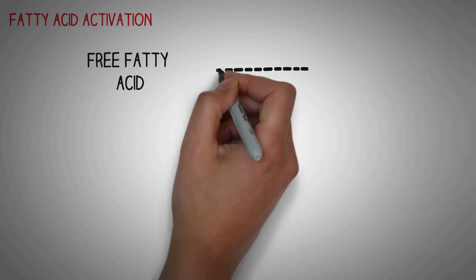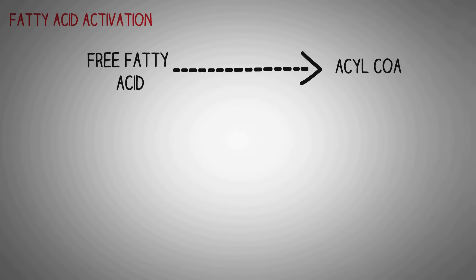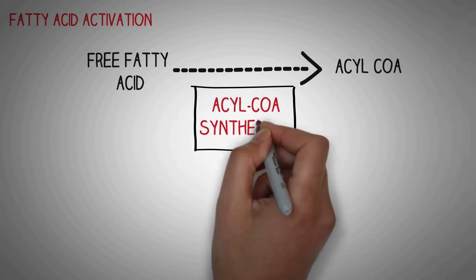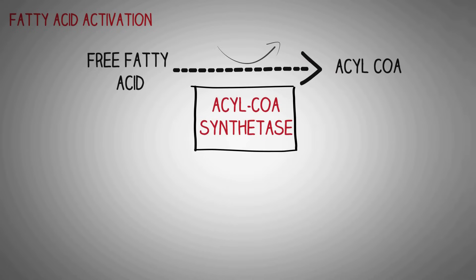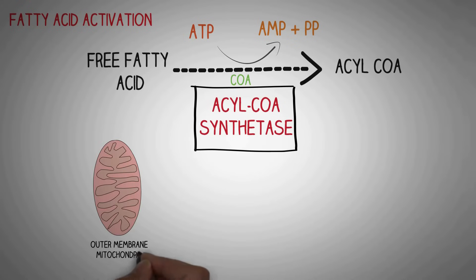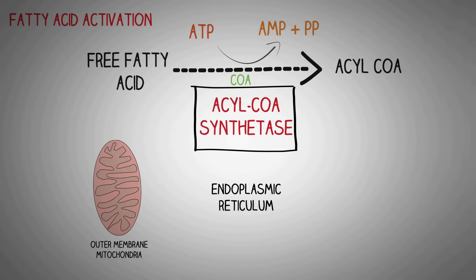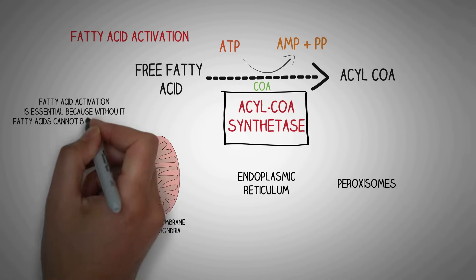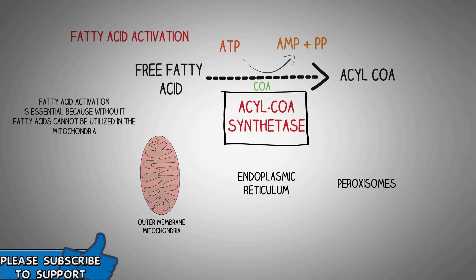A free fatty acid must be converted into its active form — acyl-CoA. Acyl-CoA is the only form that can be metabolized inside the mitochondrial matrix. This reaction is catalyzed by the enzyme acyl-CoA synthetase. In this reaction, a molecule of ATP is converted to AMP and a molecule of pyrophosphate is released; coenzyme A is also essential. This reaction takes place at many sites in the cell, including the outer mitochondrial membrane, the endoplasmic reticulum, and the peroxisomes. Fatty acid activation is essential because without it, fatty acids cannot be utilized in the mitochondria.